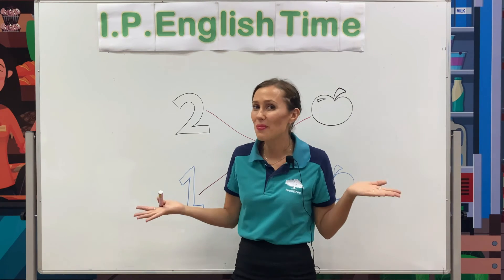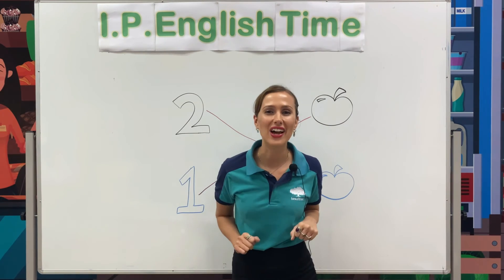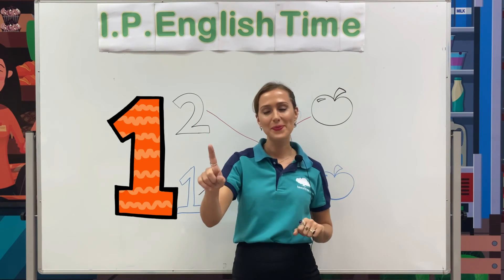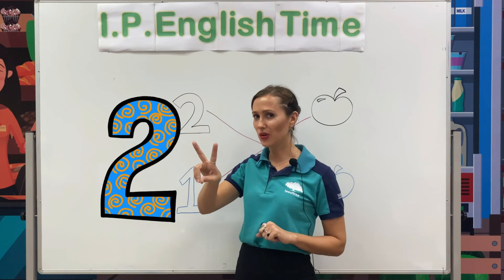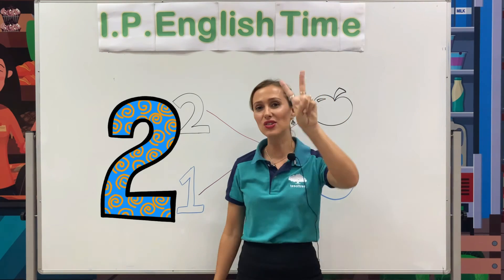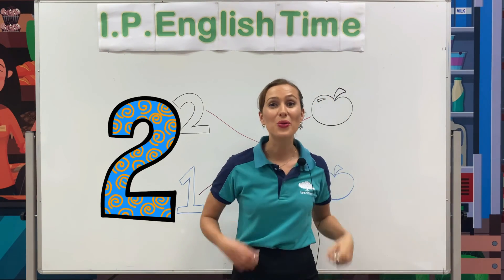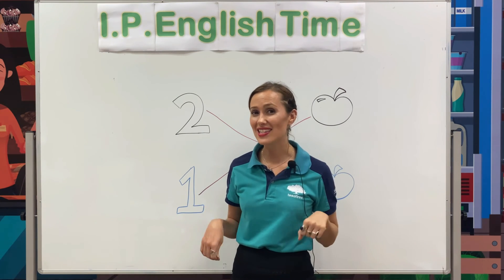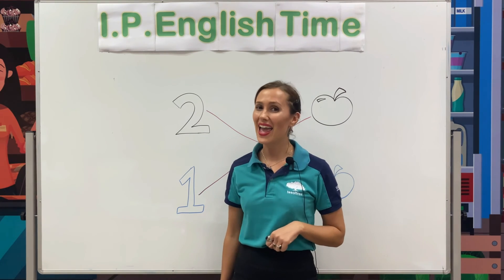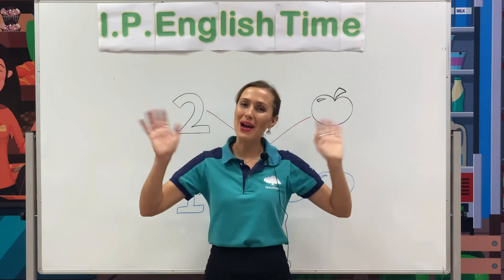Okay kids, well done! In this activity we matched the number with the apples. You can tell me how many. Kids, well done! In today's lesson you can count — 1, 2 — and you can recognize number 2. Well done! This is the end of our lesson. I hope you enjoyed watching and I will see you again in our next video. Bye bye!